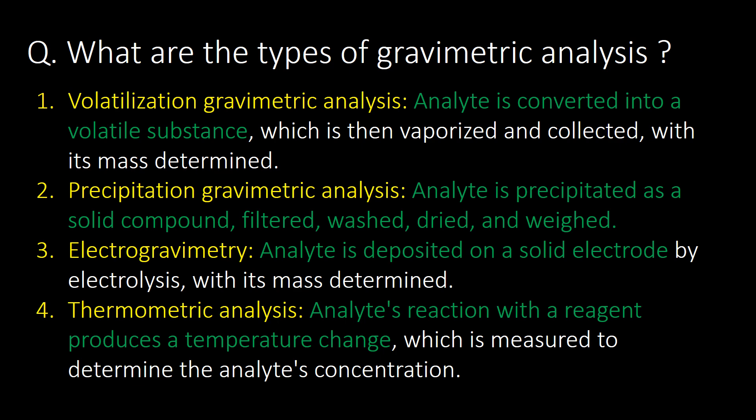Basic and very frequent question: what are the types of gravimetric analysis? Volatization gravimetric analysis and precipitation gravimetric analysis are the commonly used gravimetric analysis techniques. In volatization gravimetric analysis, the analyte is converted into a volatized substance. Whereas in precipitation gravimetric analysis, the analyte is precipitated as a solid compound, filtered, washed, dried, and weighed.